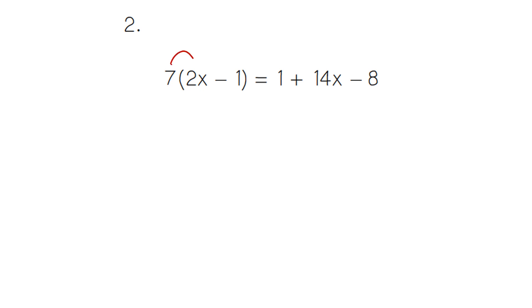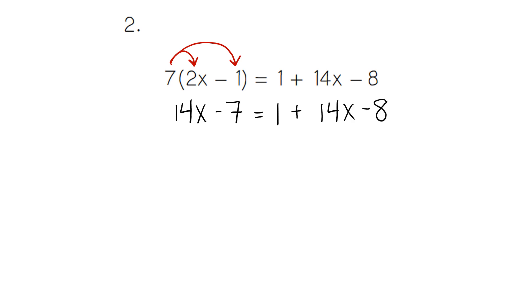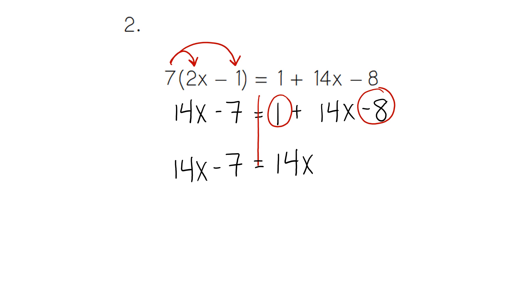For number two, we would start solving the equation by multiplying our parentheses. 2 times 7 would give us 14x. 7 times 1 gives us negative 7. We still have equals 1 plus 14x minus 8. We would then combine our like terms, the 1 and the negative 8. The 14x minus 7 stays the same on the left-hand side, and 14x stays the same on the right-hand side. 1 and negative 8 added together give us negative 7. Both sides completely match — 14x and 14x are the same, negative 7 and negative 7 are the same — so we have an infinite solution.